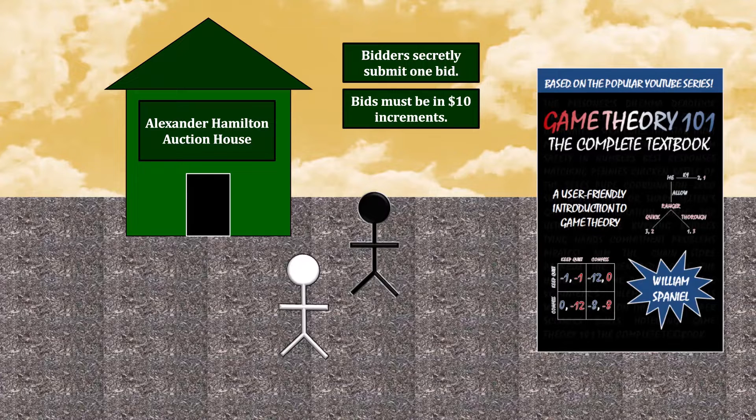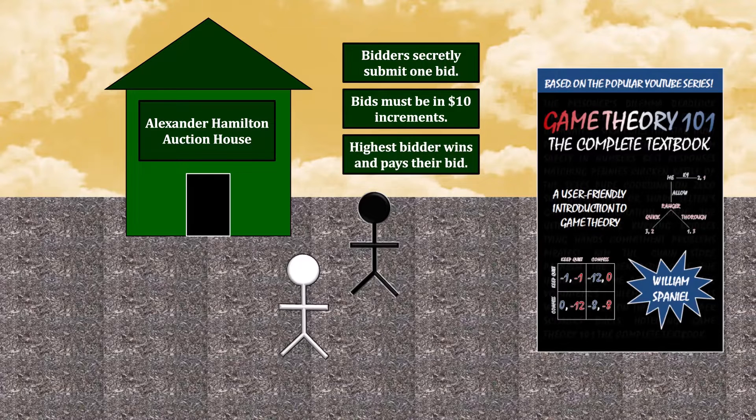Those bids cannot be $0. The Auction House will see all the bids, figure out who has submitted the highest bid, award the book to that person, and charge them an amount equal to that bid.